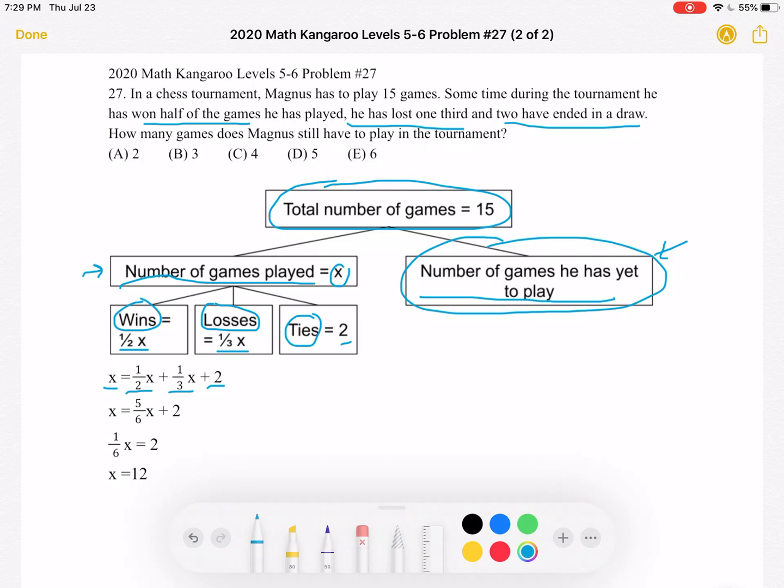So now we're going to add one half X to one third X. Again, if we give them common denominators, we will get five sixths X plus two. Now we're going to subtract five sixths X from both sides and get one sixth X is equal to two. If we multiply both sides by six, we will find that X is equal to 12.